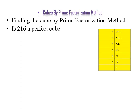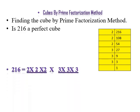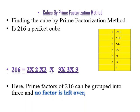So we write the prime factors of 216. If we group them into pairs of 3, the prime factors of 216 can be grouped into groups of 3 and no factor is left over — not a single factor. All the prime factors form a group of 3.